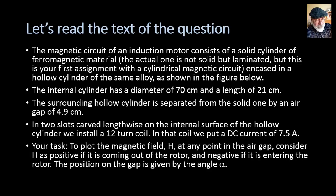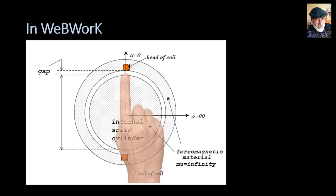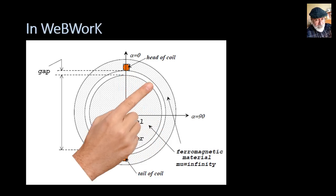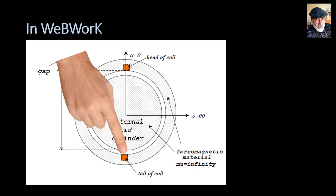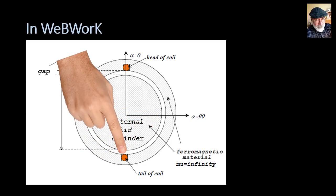Your task is to find what is the magnetic field H at any point in the air gap. Consider H as positive if it's coming out of the rotor, and negative if it's entering the rotor. The position on the air gap is given by the angle alpha. Alpha is 0 at the top and 90 degrees to the right, 180 at the bottom and so on.